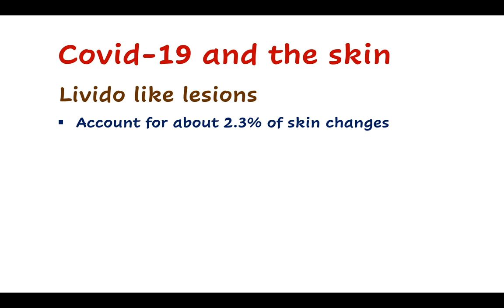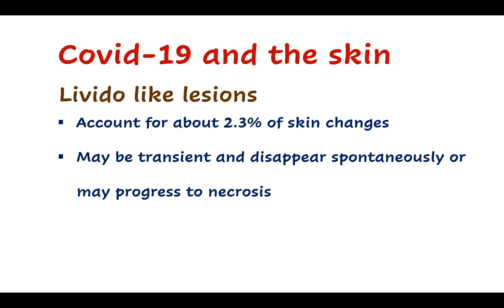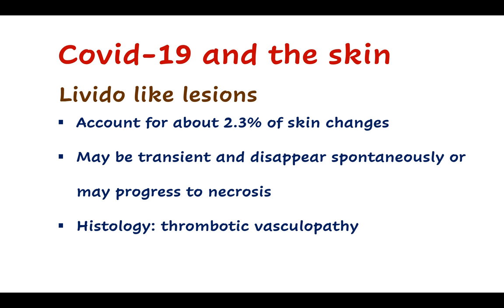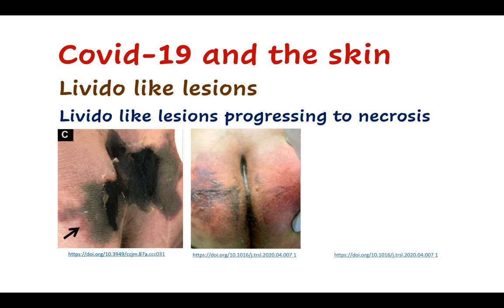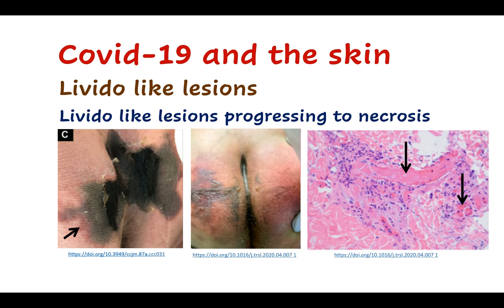Livedo-like lesions account for about 2% of skin changes in COVID-19. They may be transient and disappear spontaneously, or may progress to necrosis. The type that progresses to necrosis occurs occasionally in severe cases of COVID-19 and indicates a poorer prognosis. Histology shows thrombotic vasculopathy. An example shows livedo-like lesions progressing to necrosis, with residual livedo at the edge and necrosis at the center; histology confirms thrombosis of the blood vessels.